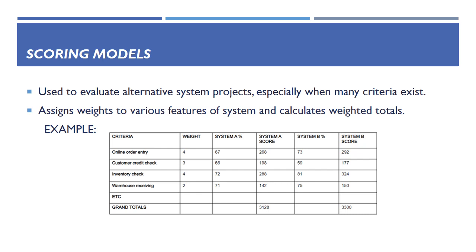Next is the scoring model. It is helpful for choosing projects when various factors need to be taken into account. It weighs the individual components of a system before calculating the weighted sum. The business must choose between two alternative enterprise resource planning solutions. The decision makers' evaluation standards are listed in the first column. The decision-making group typically holds lengthy conversations to determine these criteria. The agreement on the evaluation criteria is frequently more significant than the score when using a scoring model. Using the scoring model involves making several qualitative judgments, and experts that comprehend the problems and the technology are needed for this model.